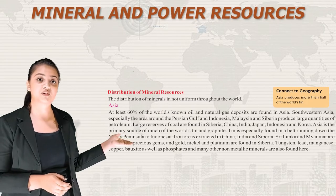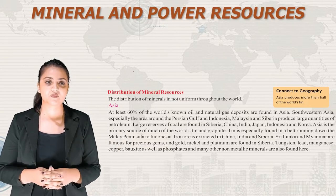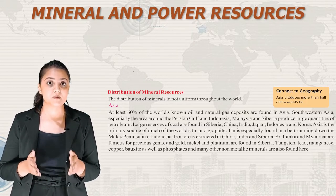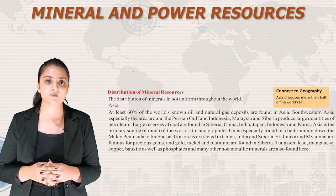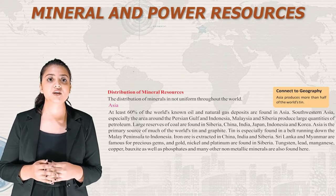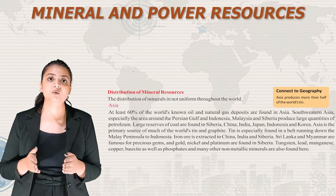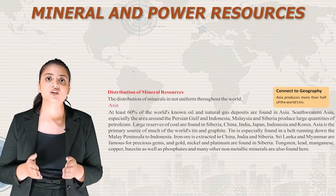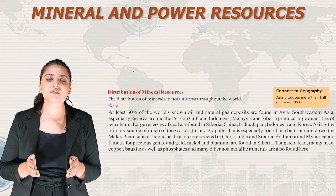Now let us talk about distribution of mineral resources. The distribution of minerals is not uniform throughout the world. In Asia, at least 60% of the world's known oil and natural gas deposits are found, especially in southwestern Asia. The area under the Persian Gulf, and Indonesia, Malaysia and Siberia produce large quantities of petroleum. Large reserves of coal are found in Siberia, China, India, Japan, Indonesia and Korea. Asia is the primary source of much of the world's tin and graphite. Tin is especially found in a belt running from the Malay Peninsula to Indonesia. Iron ore is extracted in China, India and Siberia. Sri Lanka and Myanmar are famous for precious gems and gold; nickel and platinum are found in Siberia. Tungsten, lead, manganese, copper, bauxite, phosphates and many other non-metallic minerals are also found here.